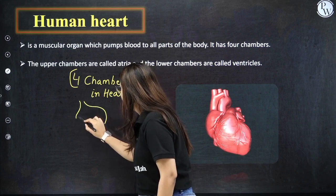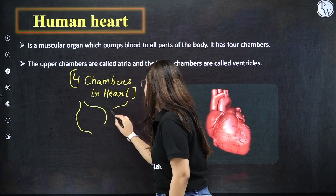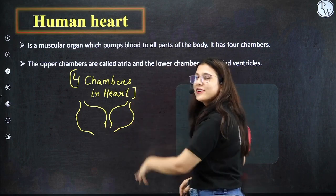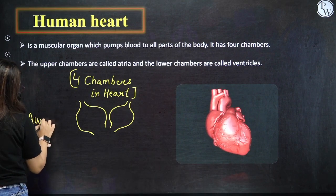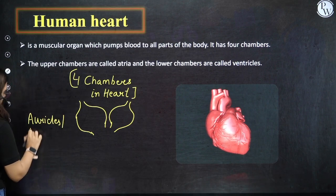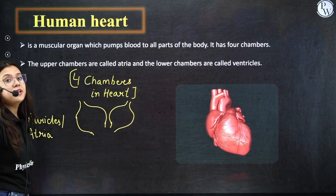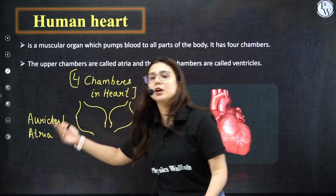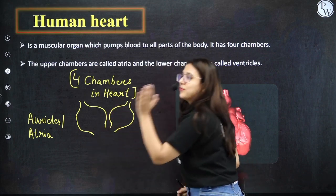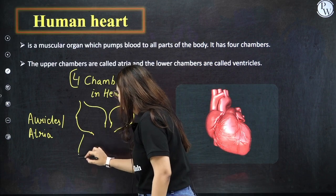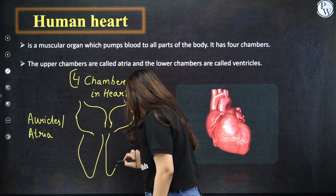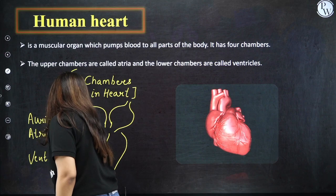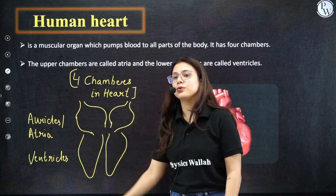Let me draw those rooms for you. The first room and the second room are present on the upper floor — we call them auricles or atrium. Atria is the plural, atrium is the singular. Auricle is singular and auricles are plural. You are going to find both terms in different books. On the second floor, we also have two chambers — the lower ones we call ventricles. The upper ones are auricles and the lower ones are ventricles.